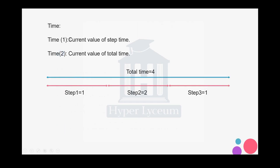Time 1 is the current step time value and time 2 is the current value of the total time. So for example if we have a model which is about 4 seconds divided into 3 steps — the first one is 1 second, the second one is 2 seconds, the third one is 1 second — if we are at a certain increment in the second step, time 1 represents the local time in the step, for example 0.2, but time 2 would be 1.2 because it adds the value of all previous steps to the current step time.